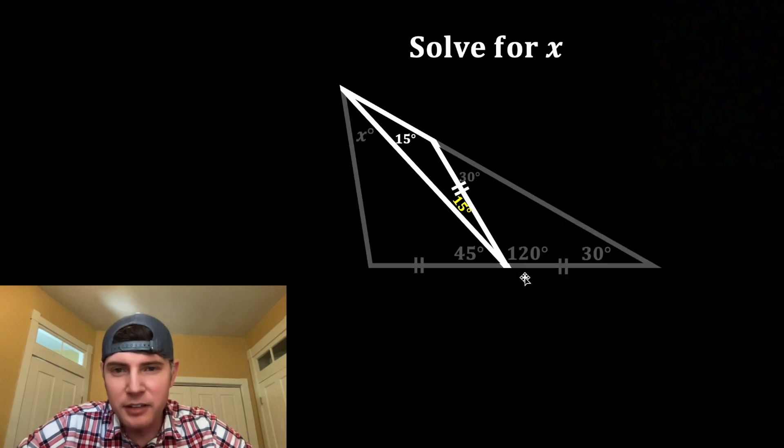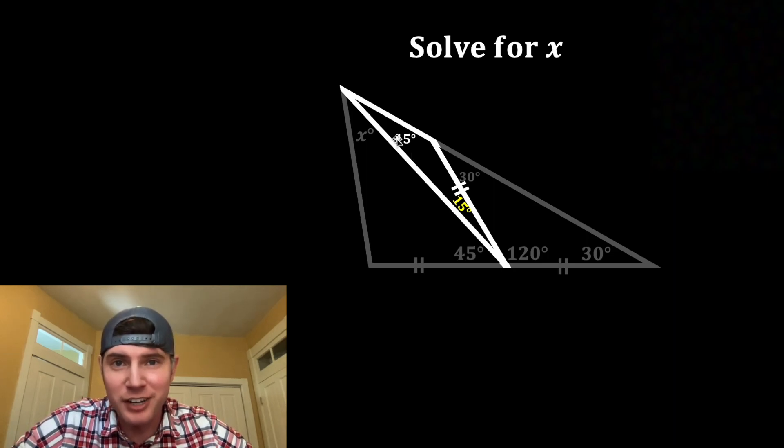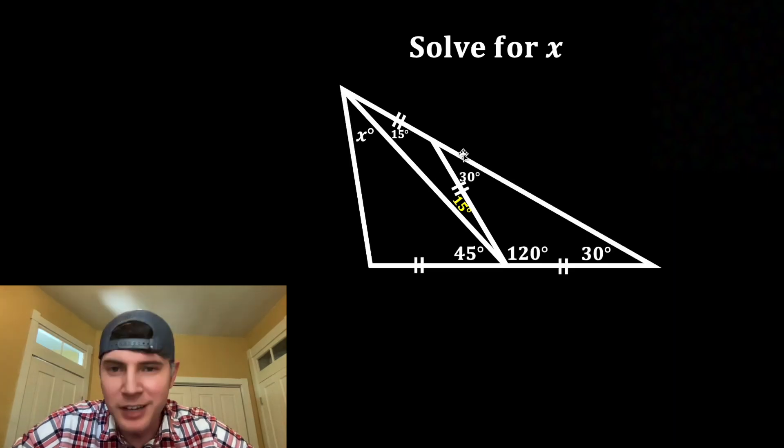Next, I'm thinking let's focus on this triangle right here. Since these angles are both 15 degrees, we know it's an isosceles triangle. And the sides opposite the congruent angles are also congruent.